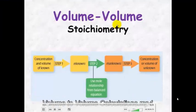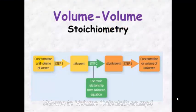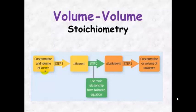Volume to Volume Stoichiometry: If we know both the concentration and the volume of a known substance, we can calculate the number of moles of that chemical. Then, by using the mole ratio relationship from the balanced chemical equation, we can calculate the number of moles of an unknown substance.